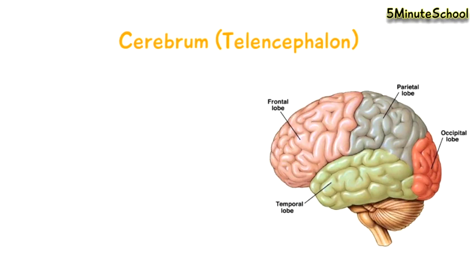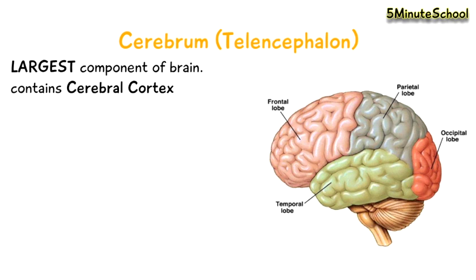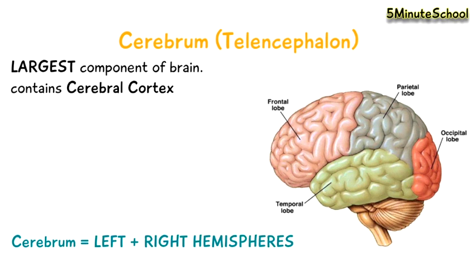Finally we have the cerebrum, which is also known as the telencephalon. This is the largest part of the brain and contains the cerebral cortex. The cerebrum consists of left and right hemispheres which are joined together by a structure called the corpus callosum.